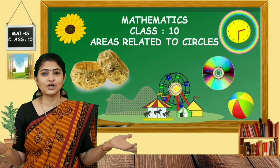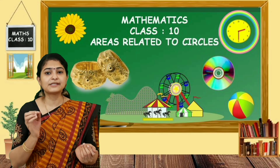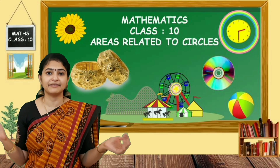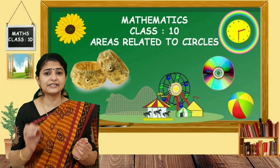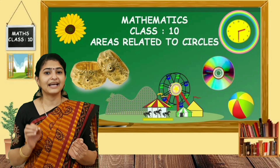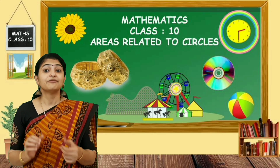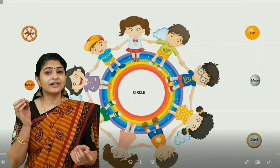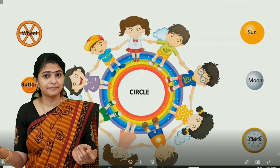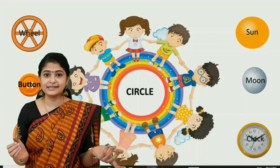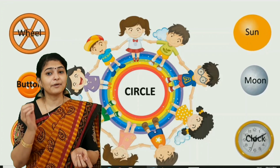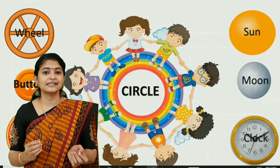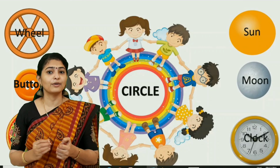We all like geometrical shapes. When we observe around us, we can see geometrical shapes everywhere. Which geometrical shape do you like most? I think some like circles — because we wear bangles on our hands, the wheels of vehicles around us, the shape of the clock in our house, etc. In earlier classes, we learned about circles.